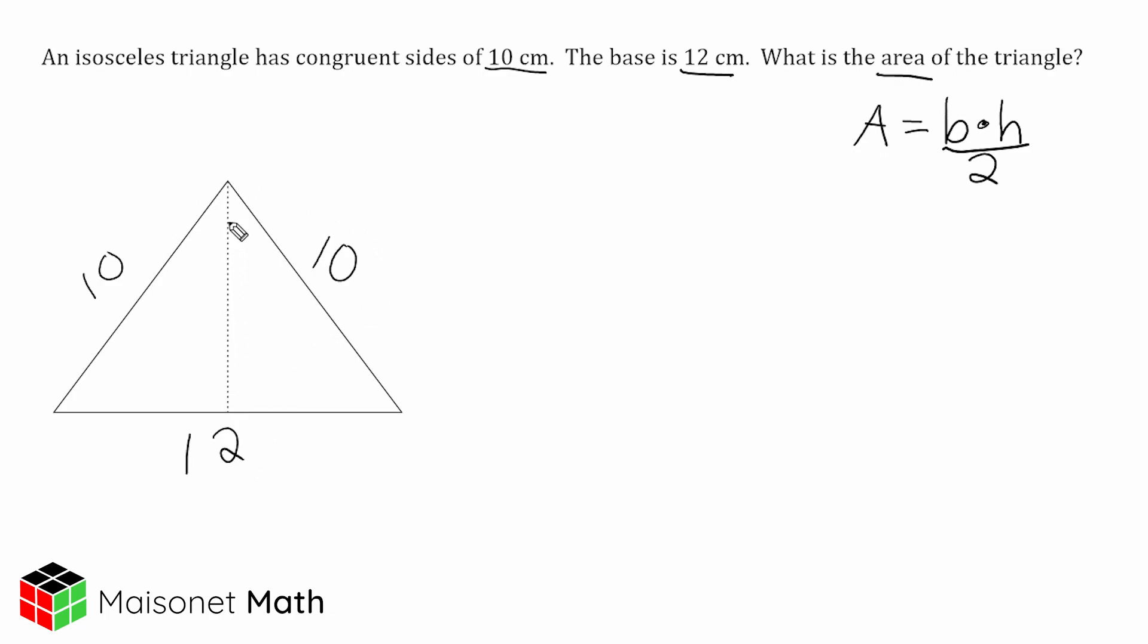So what we're going to do is we're going to see that this height right here divides this isosceles triangle in half. We have two congruent right triangles. If we just take a look at this triangle right here, we can see that the height of this triangle and half of this base form the two legs of our right triangle.